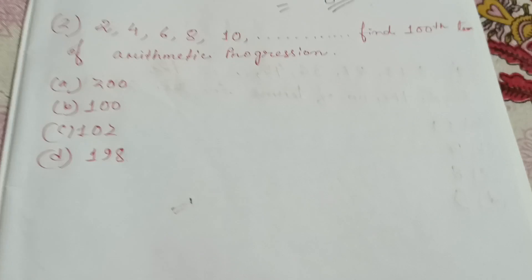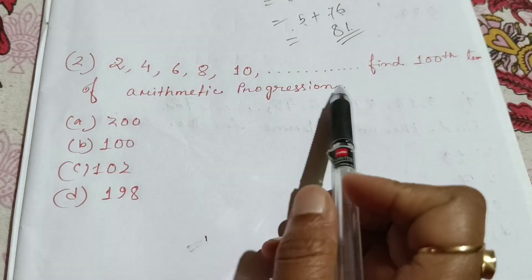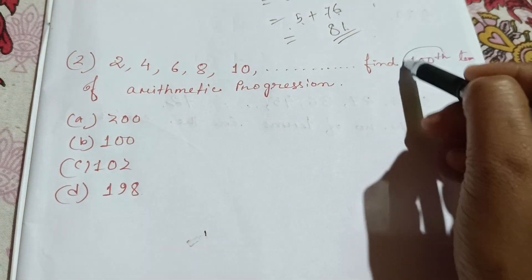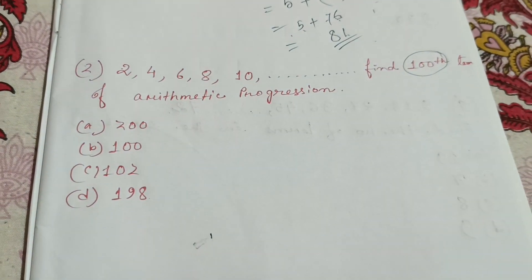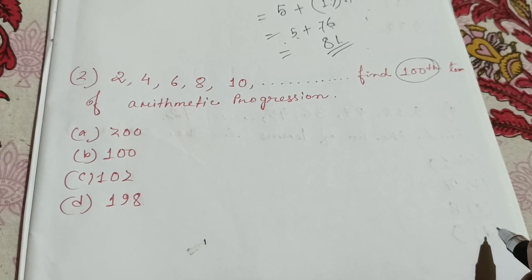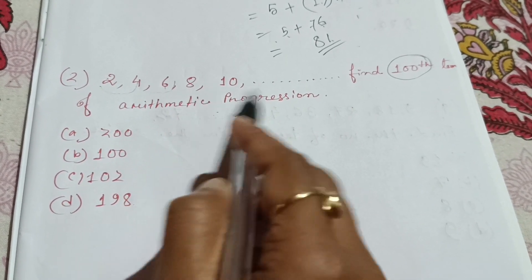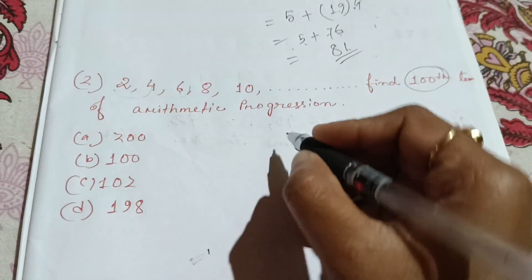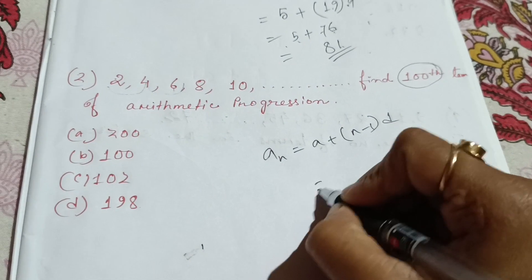Next question: the series is 2, 4, 6, 8, 10. Find the 11th term of this arithmetic progression series. Apply the formula: a plus n minus 1 into d.